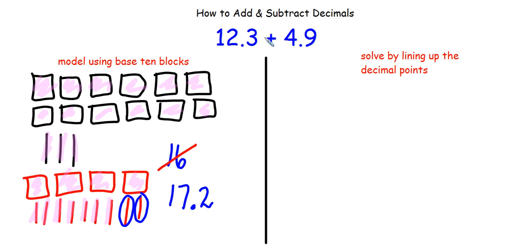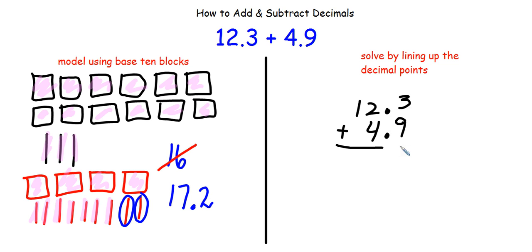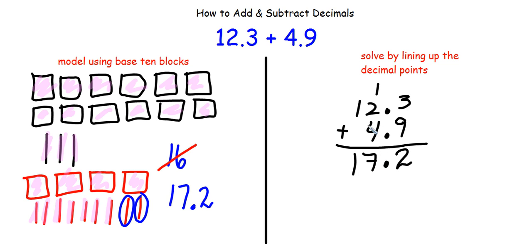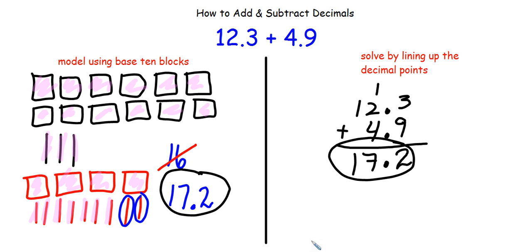Let's solve that same problem by lining up the decimals. I have 12 and 3 tenths, and I line up the decimals and put 4 and 9 tenths underneath. I bring down the decimal first so I don't get confused. 3 plus 9 is 12 — write the 2, carry the 1. 1 plus 2 is 3, then 3 plus 4 is 7, and 1 plus nothing is 1. Same answer as before: 17 and 2 tenths.